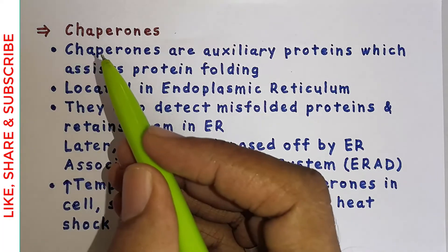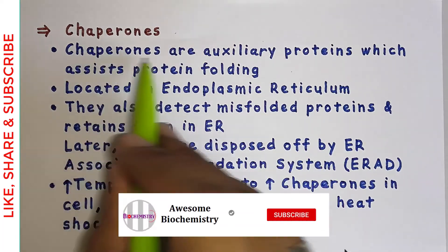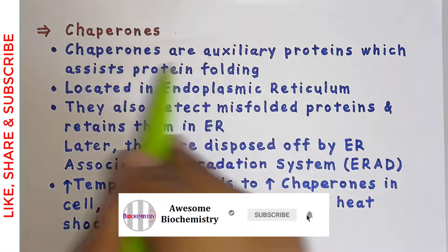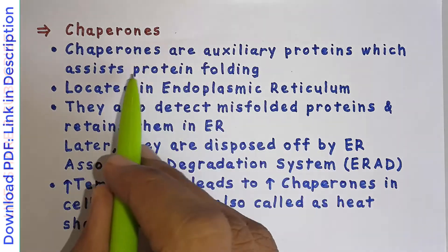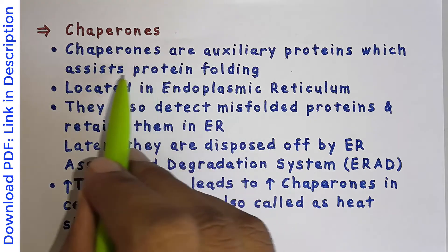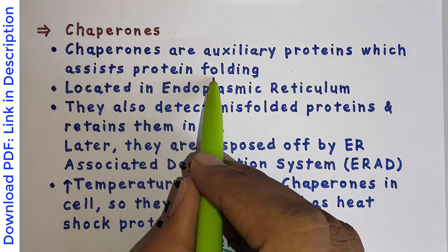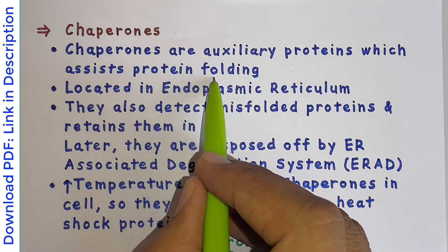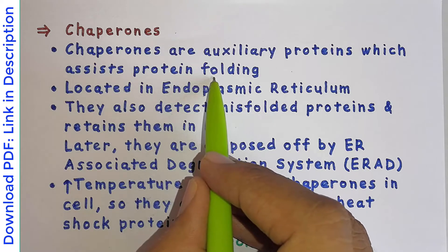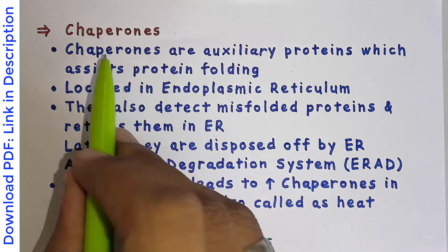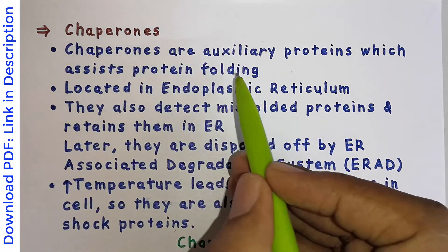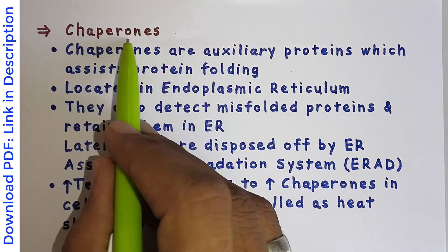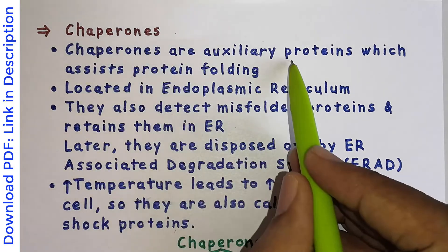What are chaperones and what is their function? Chaperones are auxiliary proteins which assist protein folding. Their main function is to help in protein folding. We had seen that protein folding is not random but guided, and these guiding molecules are the chaperones. Chaperones help other proteins in folding, and themselves, these chaperones are also proteins.